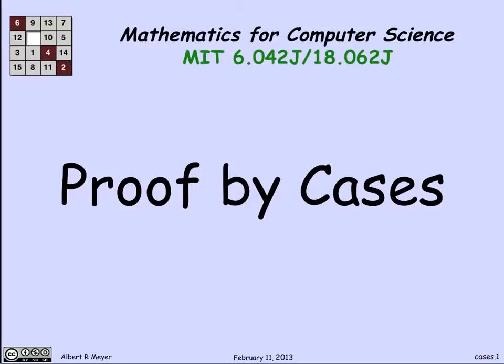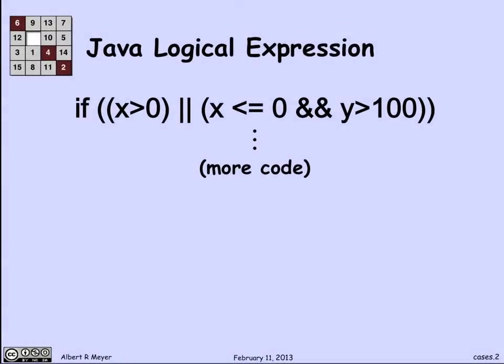Let's look at an explicit, simple example from computer science. Here's a Java logical expression. The way to decipher this is that the double vertical bar means or in Java, and the double ampersand means and in Java. So this is a conditional test, an if test, that is the guard on a bunch of code to be executed if this test comes out to be true.